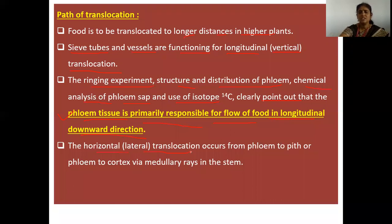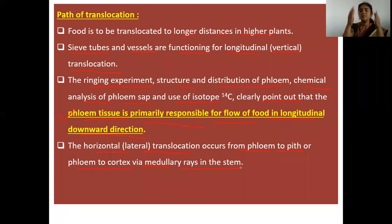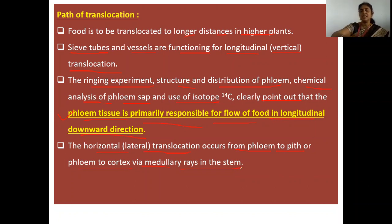Horizontal, that is lateral, translocation occurs from phloem to pith or from phloem to cortex via medullary rays in the stem. There is no food material stored in the center of the stem, so lateral translocation accounts for the horizontal distribution of food.